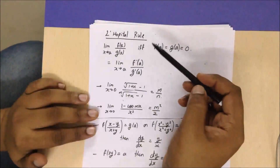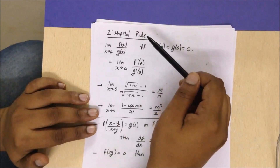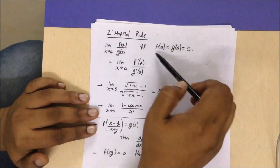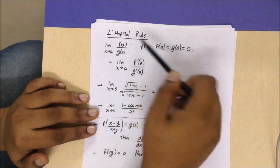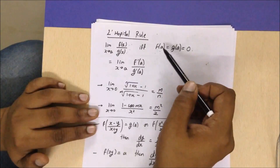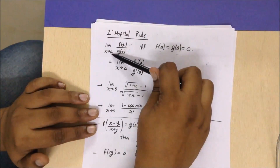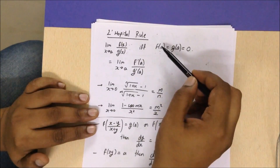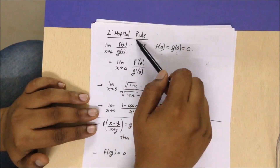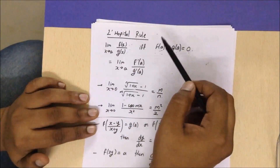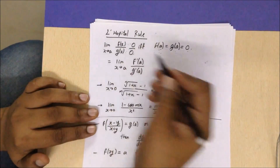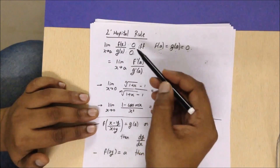The first topic is continuity. The most important rule you can apply in continuity is L'Hôpital's rule. In L'Hôpital's rule, whenever you have a division of two functions f(x) and g(x), you have to check the condition: if at the limit point x tends to a, both f(x) and g(x) are zero, then only you can apply L'Hôpital's rule. The ratio must always be zero by zero form.